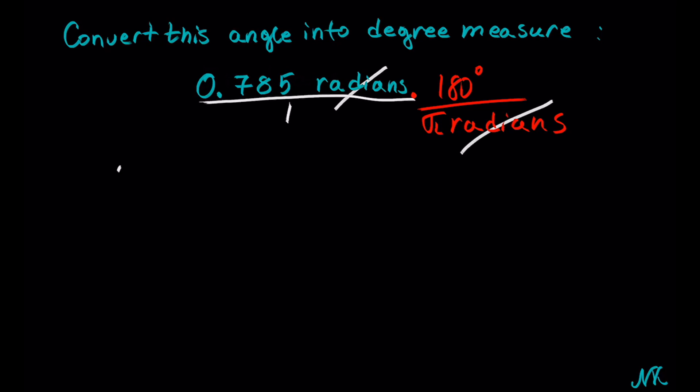So we get 0.785 times 180 degrees over pi. In the numerator we have 0.785 times 180, and the product is 141.3 degrees over pi.